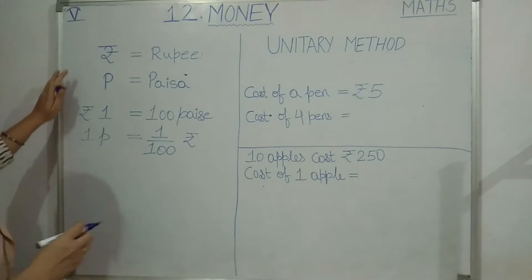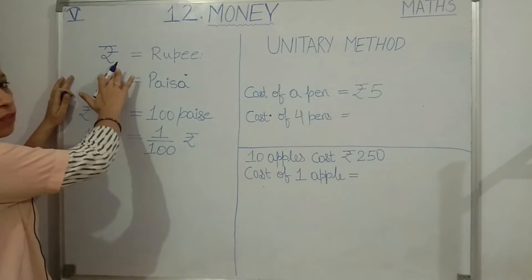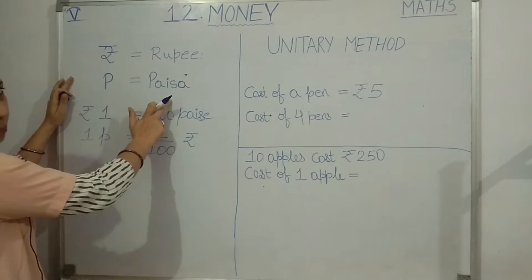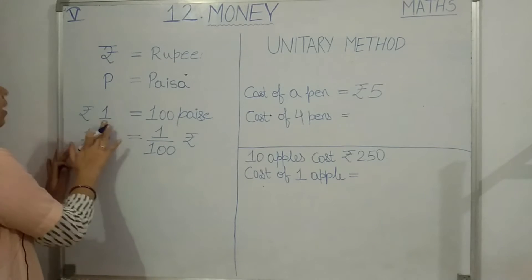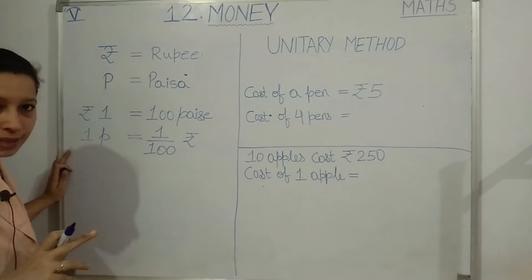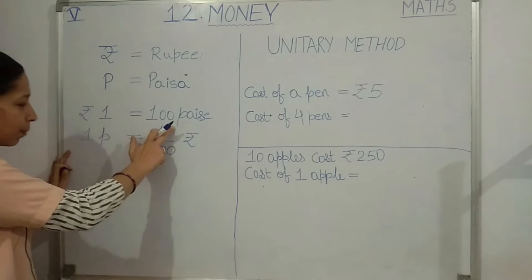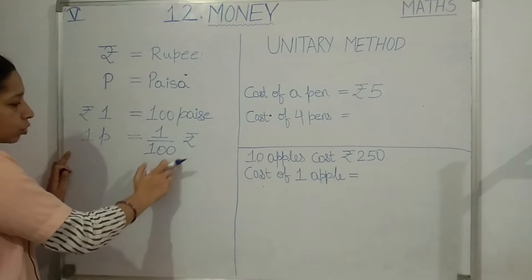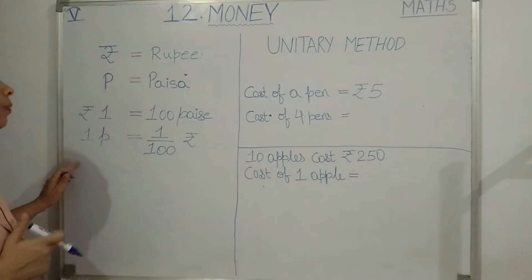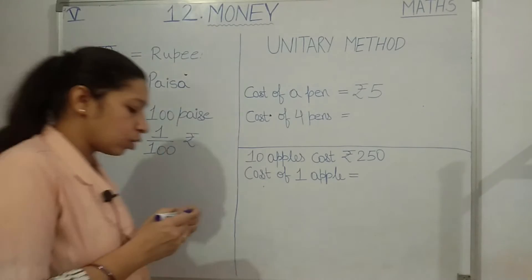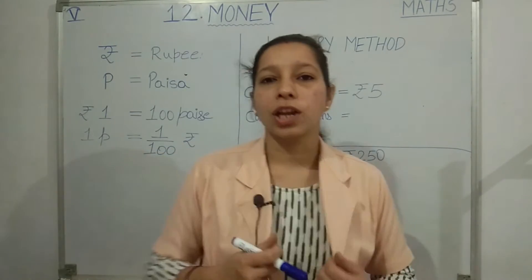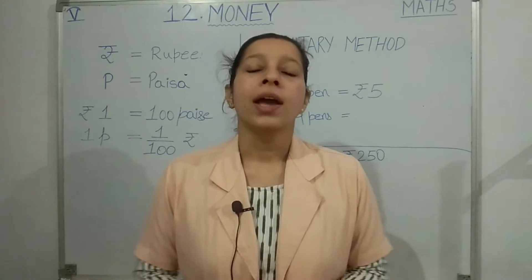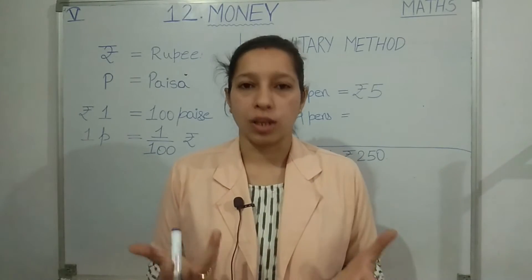We know that this symbol is for rupee, and we use the symbol 'p' for paise. We have studied that one rupee has hundred paise, and in the same manner one paise equals one upon hundred rupee. In your earlier classes you have also studied conversion of rupees into paise and paise into rupees.